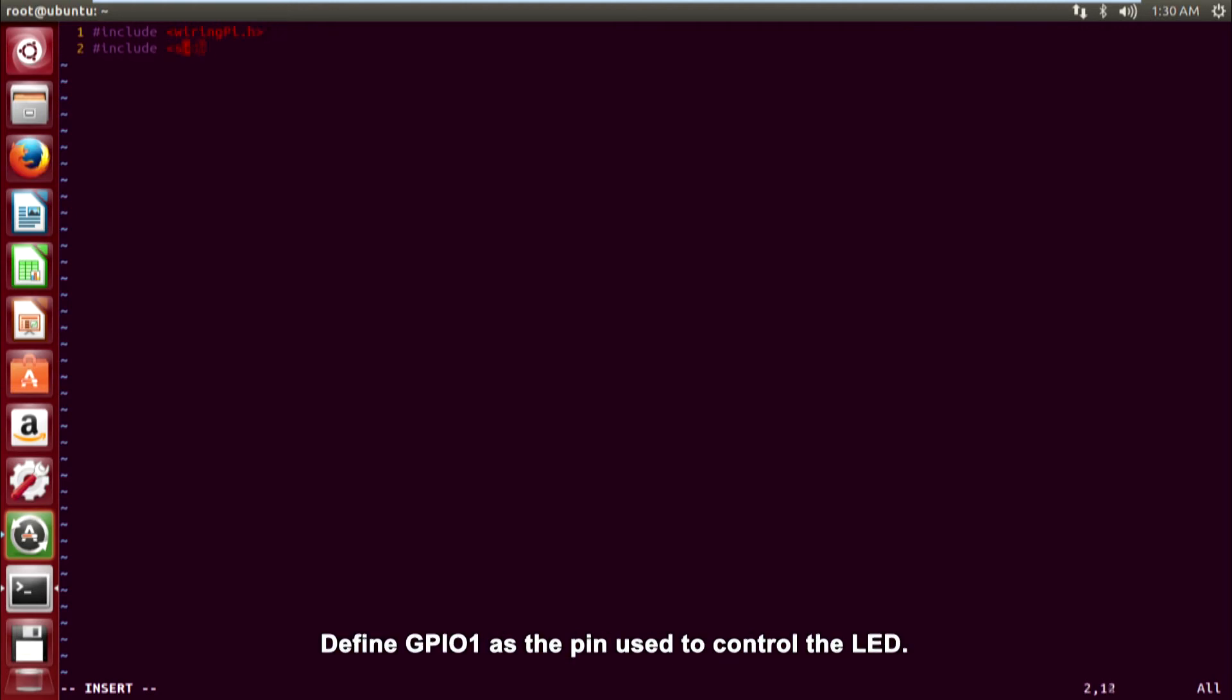Define GPIO1 as the pin used to control the LED. Next, we write main function. We set the LED pin as PWM output mode.